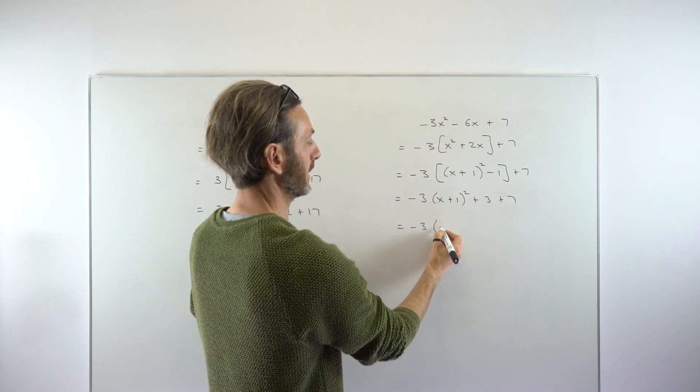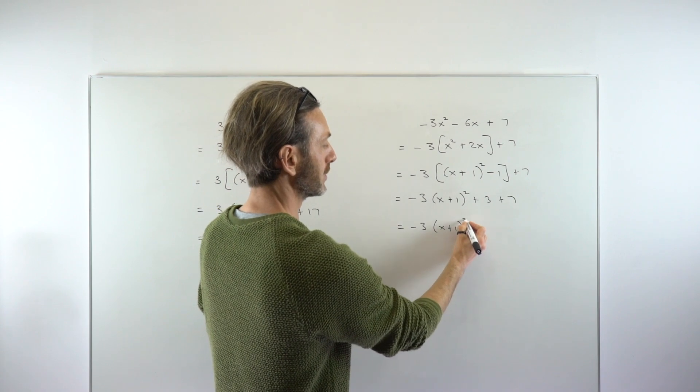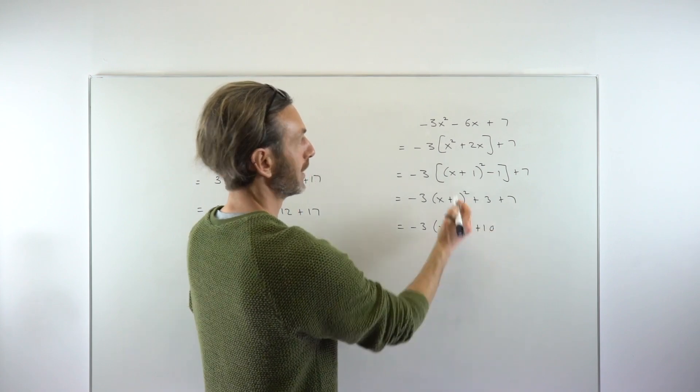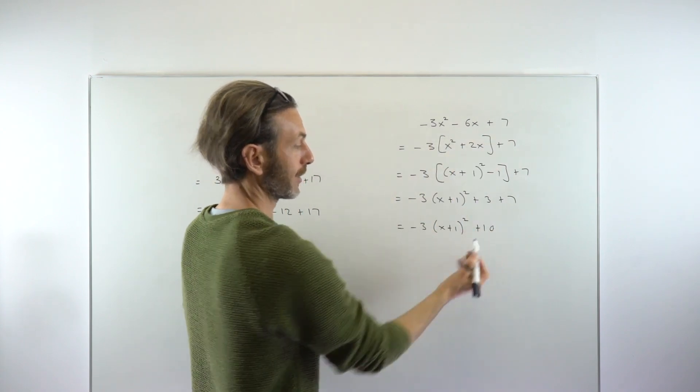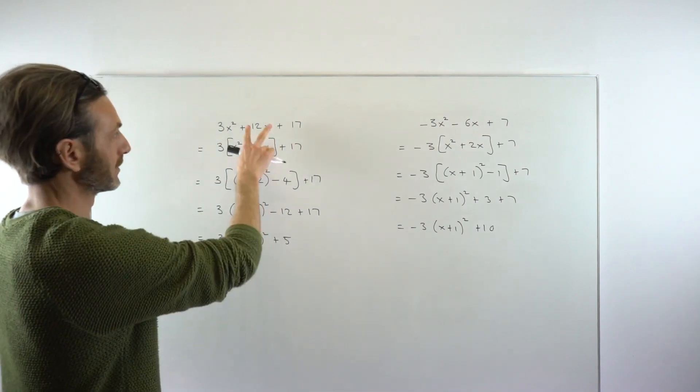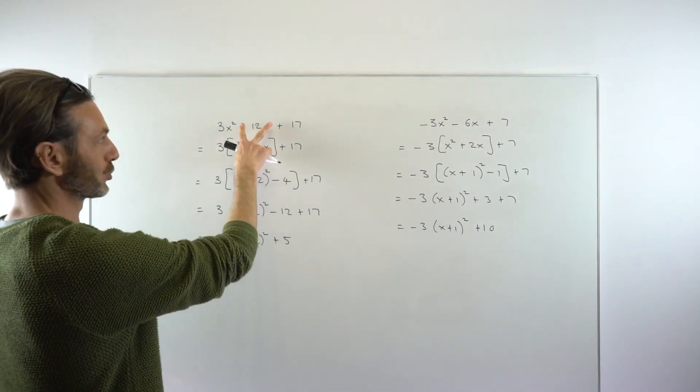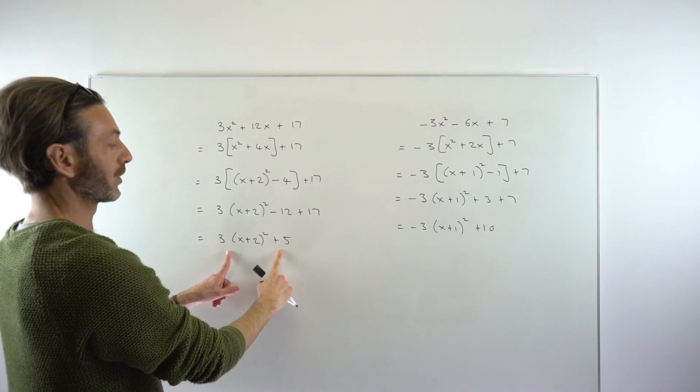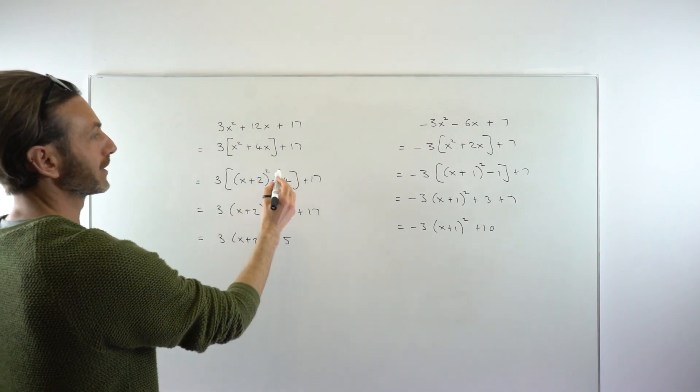You can just combine those end numbers to give you a plus 10. That expression and the original are the same thing, just written in a different way—the same way that the original trinomial and the completed square form are the same thing.